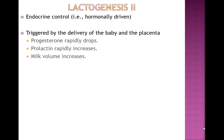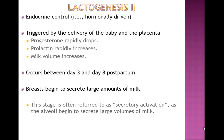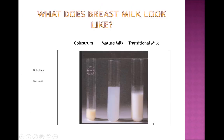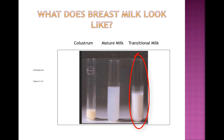Lactogenesis 2 typically occurs around three to eight days postpartum. This stage is referred to as secretory activation because the alveoli begin to secrete large volumes of milk. It is also the time when the colostrum phase ends — the body stops producing colostrum and starts producing transitional milk. Colostrum is more yellow than mature milk; mature milk has a white, opaque look; and transitional milk is essentially a mixture of the two.